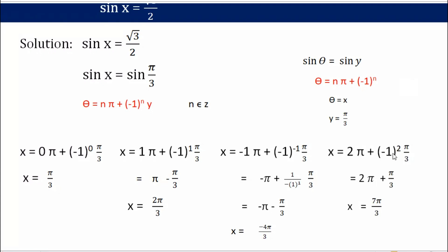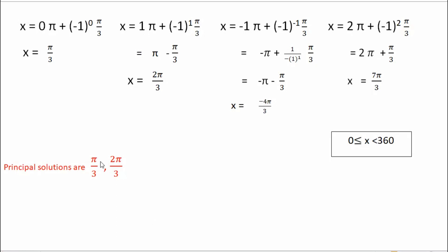For n = 2: (−1)^2 = 1, so x = 2π + π/3 = 7π/3. Since π/3 is 60°, 7×60 = 420°, which is greater than 360° — not a valid solution. Continuing with larger positive n gives values above 360°, and negative n gives values below 0°. Therefore, the principal solutions are x = π/3 and x = 2π/3.